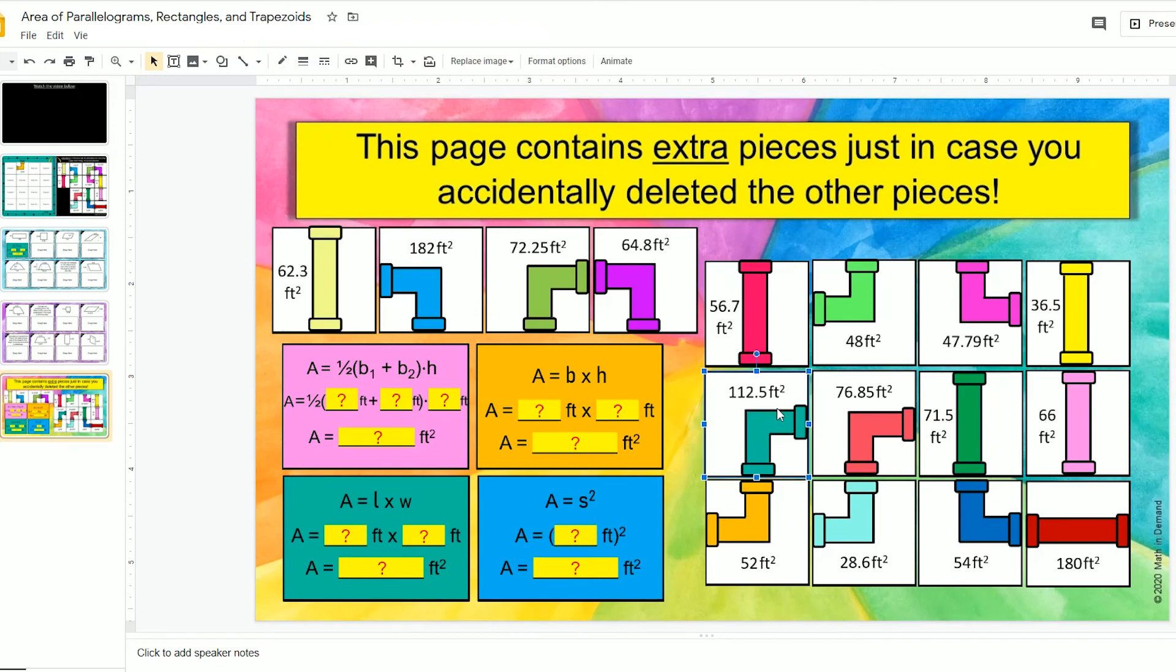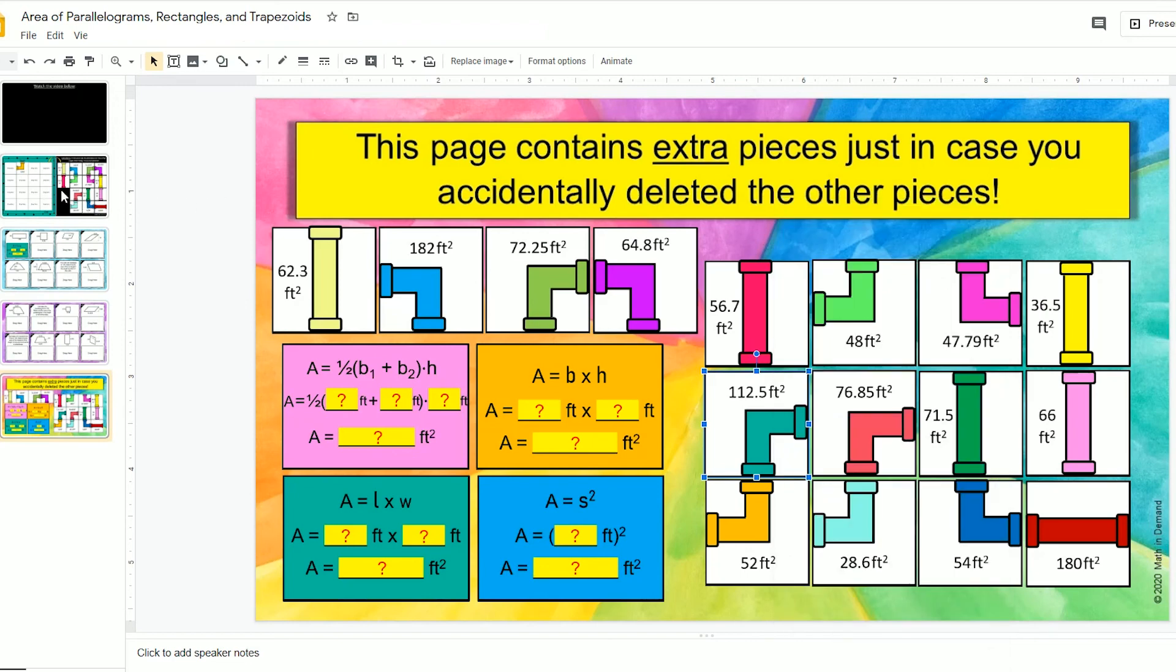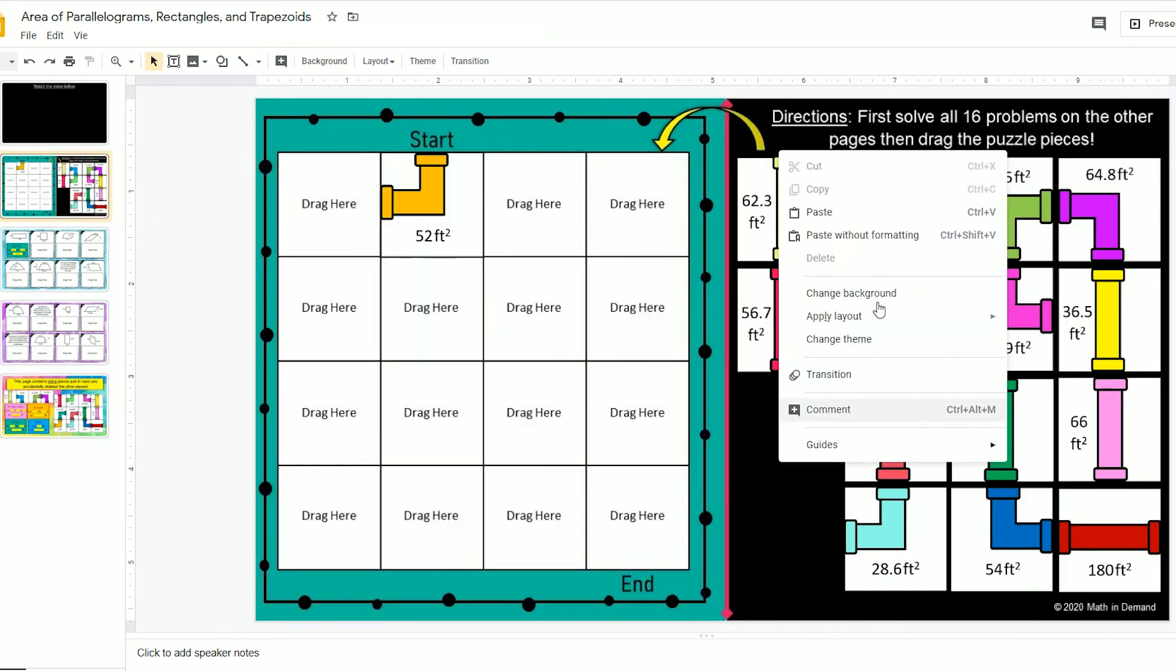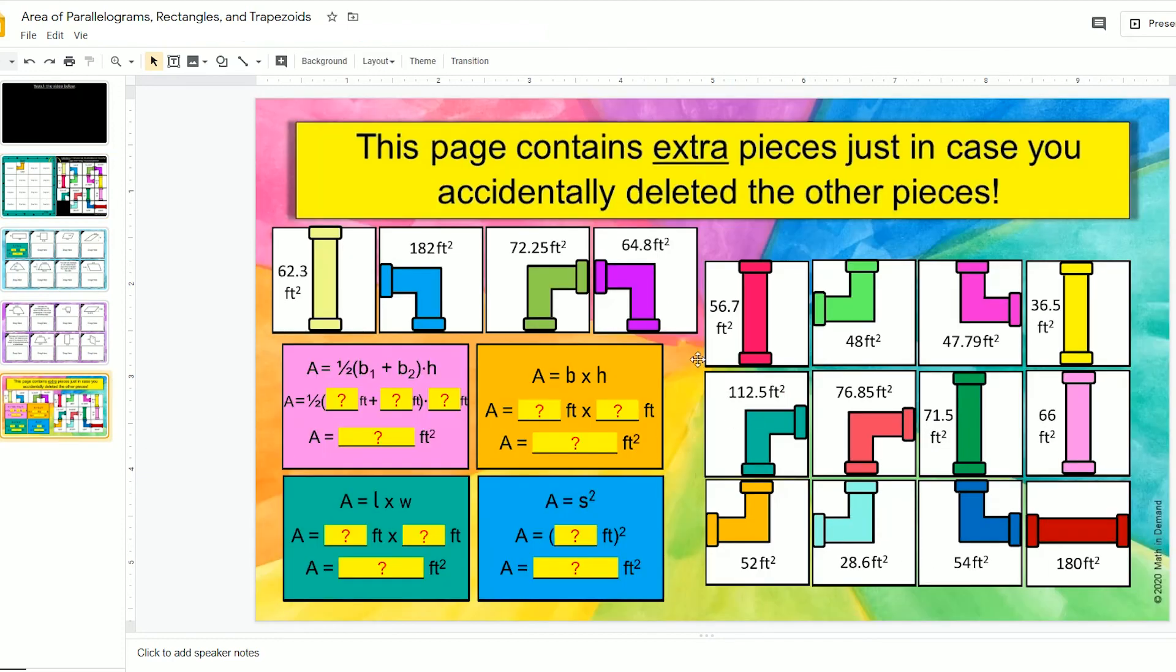You can highlight it, right-click, copy, go back to the page, right-click, paste. And then you have that puzzle piece. So again, these are all extra puzzle pieces if you delete them accidentally.